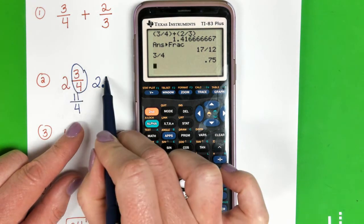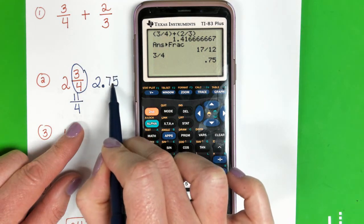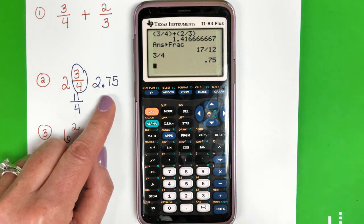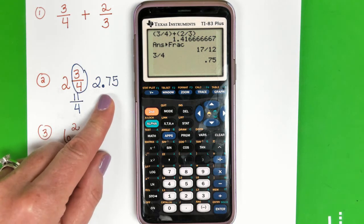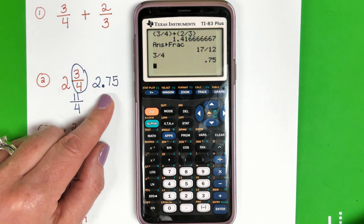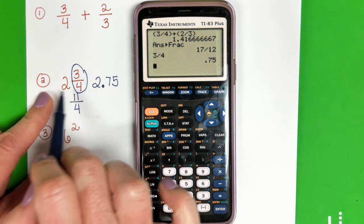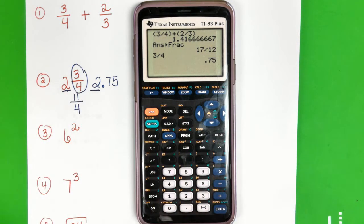So 2 and 3/4 as a decimal is 2.75. So that's what I would recommend you do, so that if you're having to use it in a formula or something like that, it'll be much easier for you to do. So change fractions to decimals and put that whole number in front of the decimal.